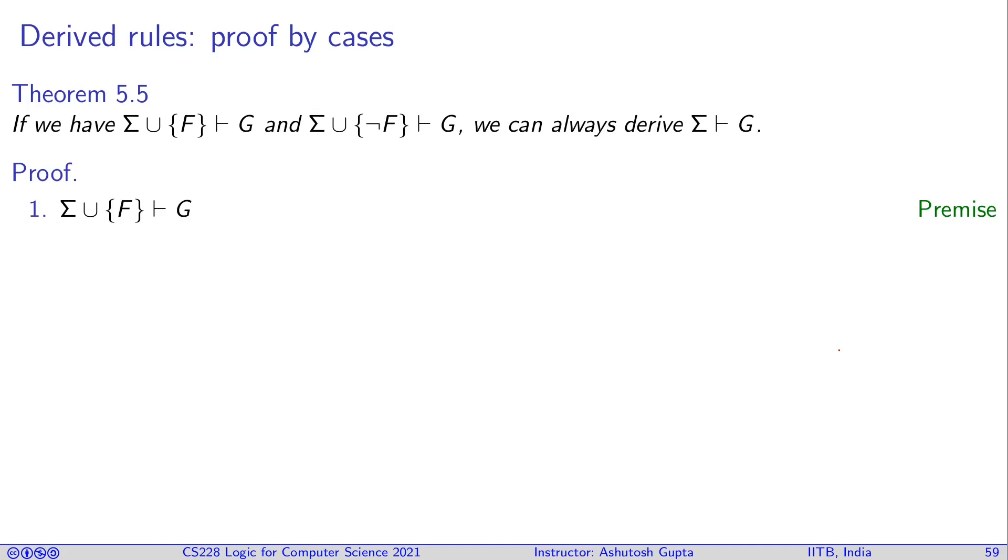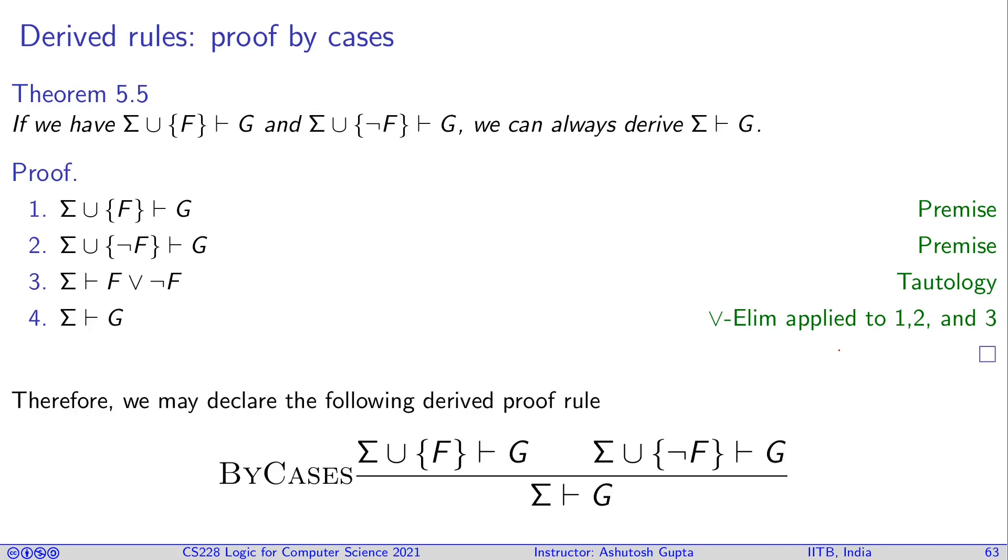So how do we do that? First we write what we know: from sigma union F we can derive G, and sigma union not F we can derive G. Now what we can do using tautology, we can derive F or not F which we have seen. And now we can use or elimination to get rid of F and not F on the left hand side and get G derived from sigma. And we can write it as a by cases proof rule.